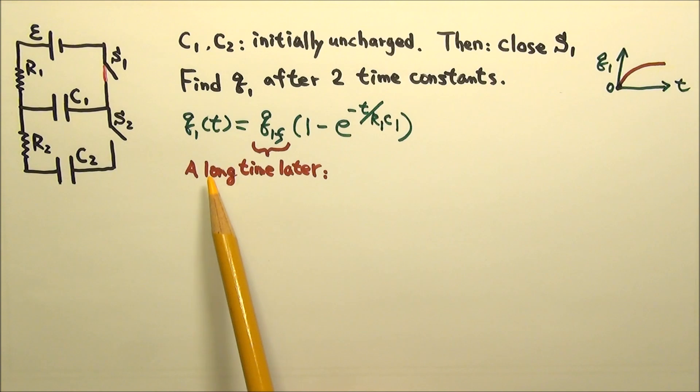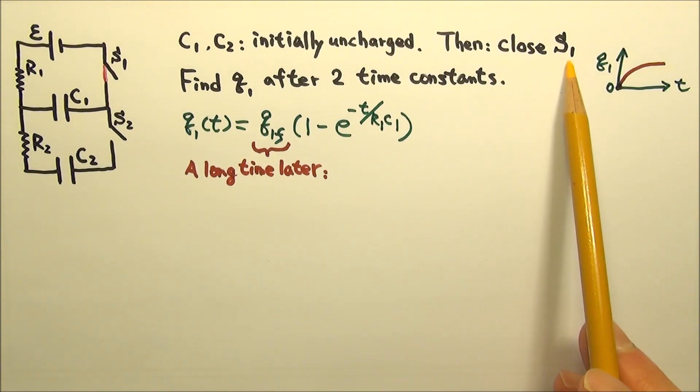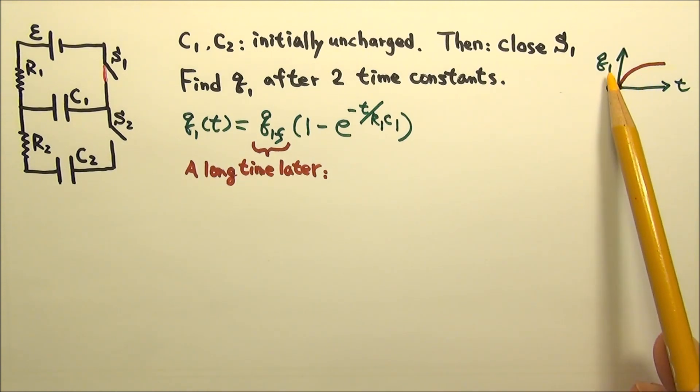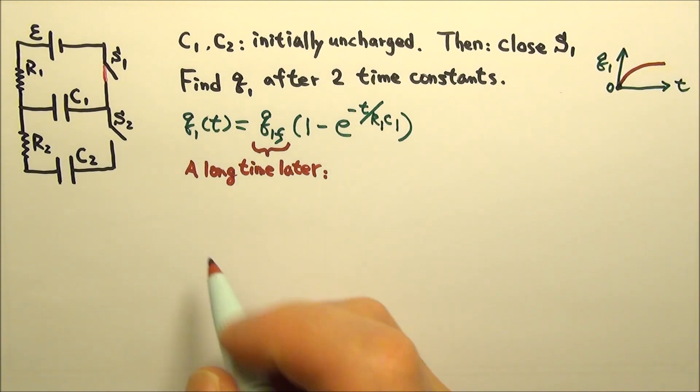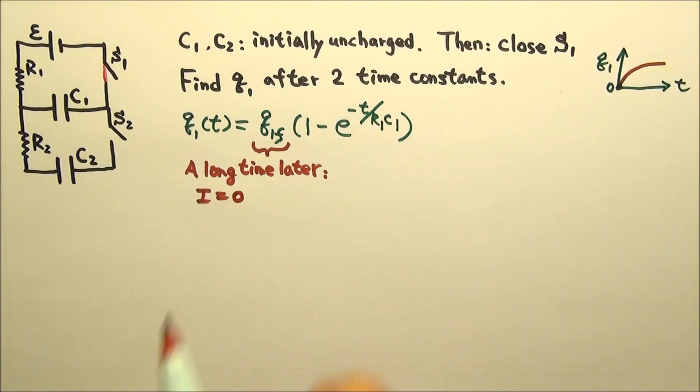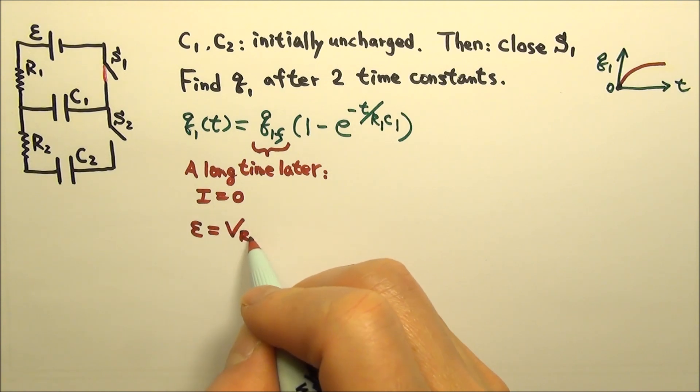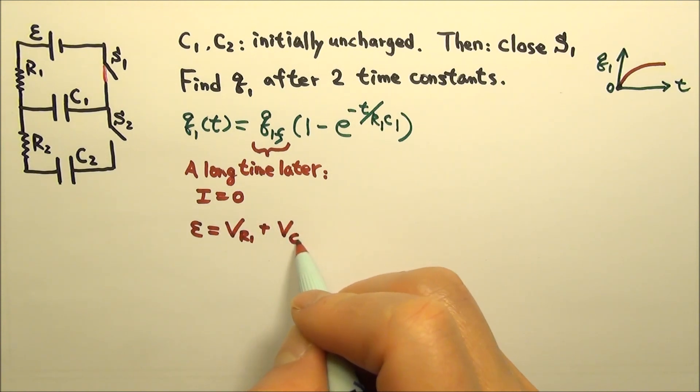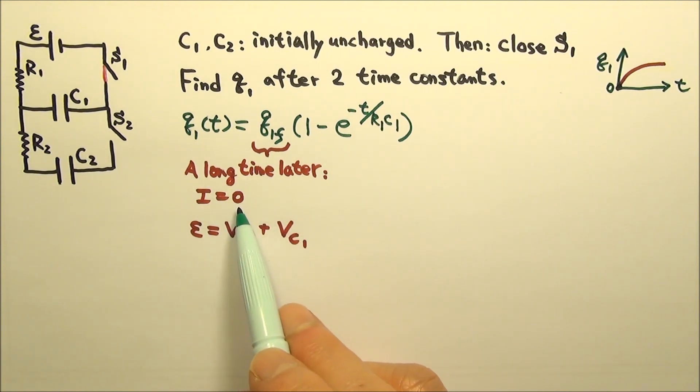To find the final charge, we can look at a long time after S1 is closed. Since C1 will be fully charged, there will be no more charging current. And since R1 and C1 are in series, together they share the battery's EMF. When there is no current, I times R1 is zero.